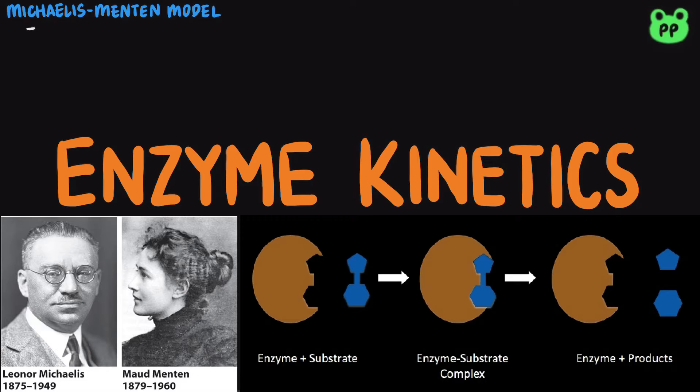They postulated that the enzyme abbreviated as E first combines with its substrate abbreviated as S to form an enzyme substrate complex, abbreviated as ES, in a relatively fast reversible step, with the forward rate K1 and the reverse rate K-1.